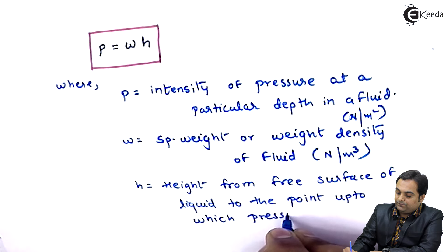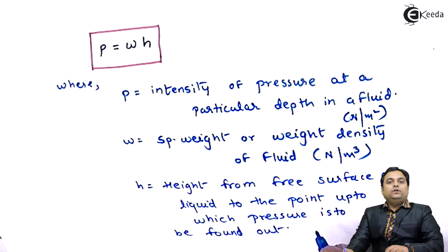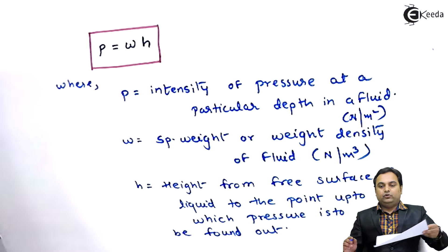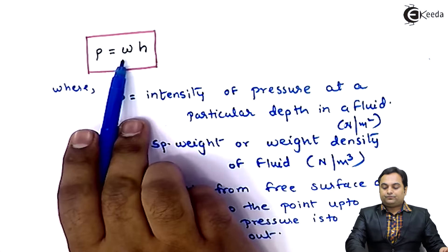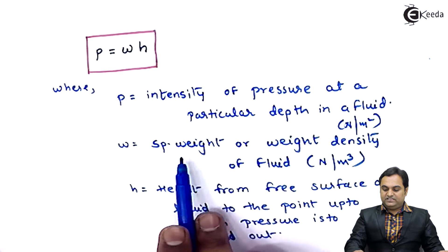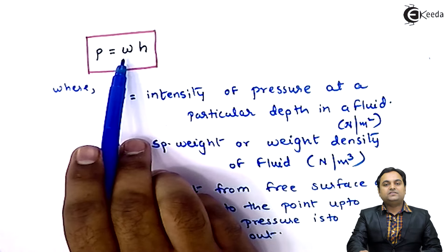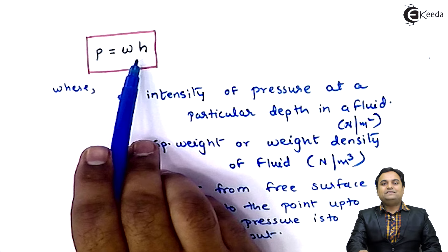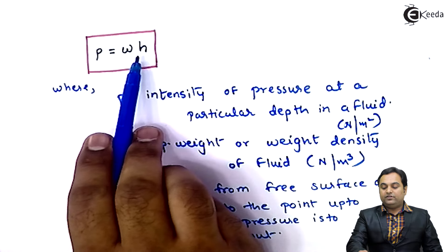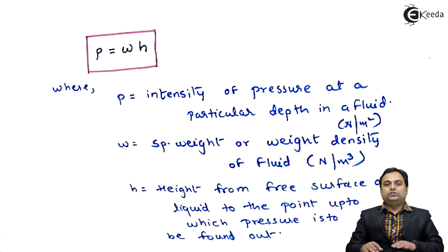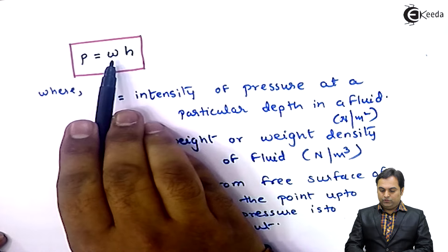So we have the relation: pressure at any given height can be found using the formula w into h, where w is the specific weight or weight density of the fluid, as per hydrostatic law. The pressure intensity is directly proportional to the weight density into h, and since h goes on changing, pressure is also directly proportional to h.